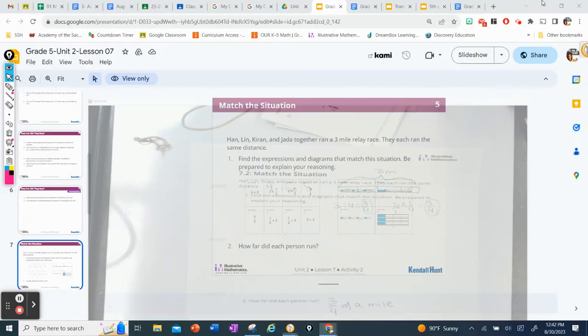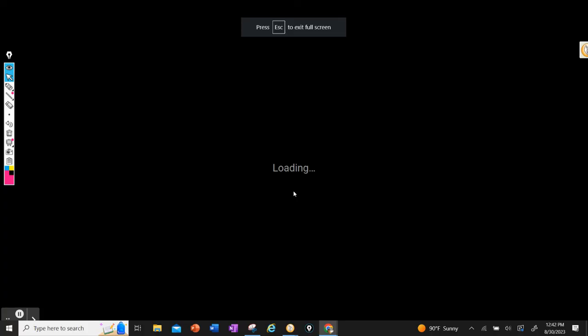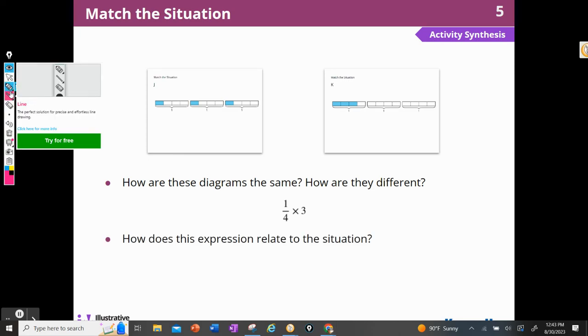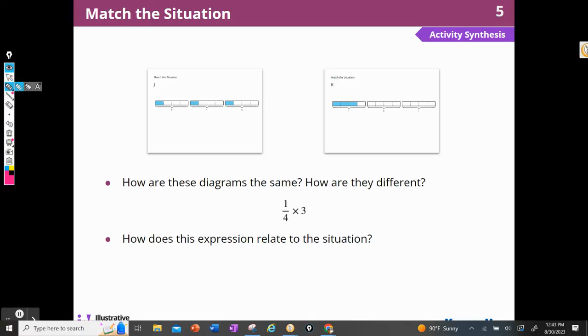How are these diagrams the same, and how are they different? Well, I noticed that they are the same because they are both divided into three pieces. They both have three holes. And they're all divided into four pieces. This one shows three fourths altogether. And this one shows one fourth, one fourth, and one fourth. And if I add all those together, I get three fourths.